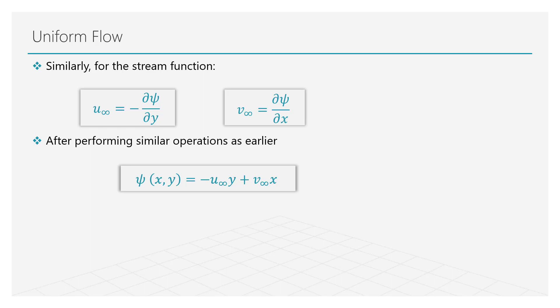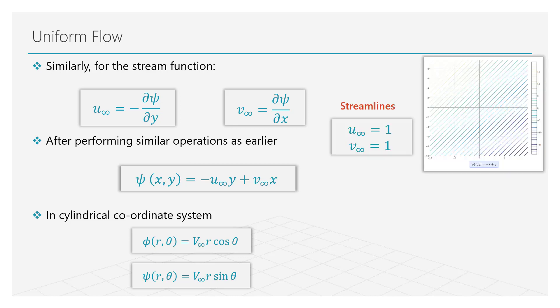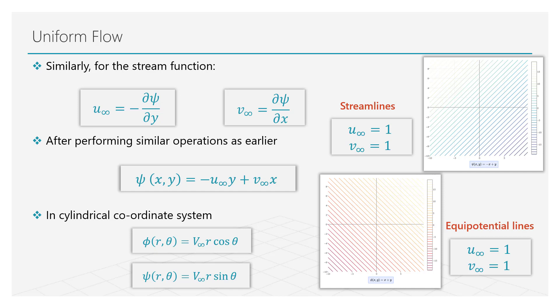In order to visualize the profiles for these functions, let us assign numerical values to the two velocity components. By doing so, we will be able to plot the streamlines and the equipotential lines as shown here. Streamlines, as we discussed previously, describe the direction of the motion of the fluid. The equipotential lines, on the other hand, as seen here, are orthogonal to the streamlines.